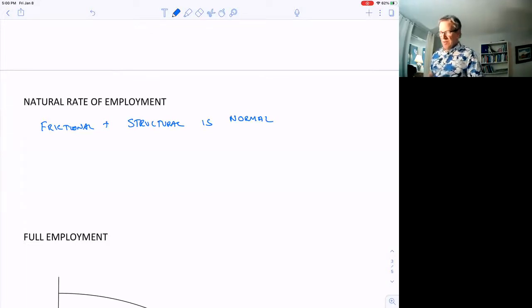So say, for example, frictional unemployment is 2% of the labor force and structural unemployment is 4% of the labor force. Well, that means that 6%, an unemployment rate of 6% would be normal. And that would be full employment. So if that economy had 6% unemployment, then we would say that's full employment.